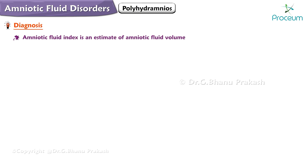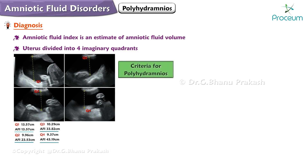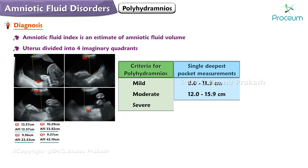The amniotic fluid index is an estimate of amniotic fluid volume; the uterus is divided into four imaginary quadrants. Here are the criteria for mild, moderate, and severe polyhydramnios based on the single deepest pocket measurement. In mild polyhydramnios, it ranges from 8.0 to 11.9 cm. In moderate polyhydramnios, it ranges from 12.0 to 15.9 cm. In severe polyhydramnios, it is greater than or equal to 16 cm.